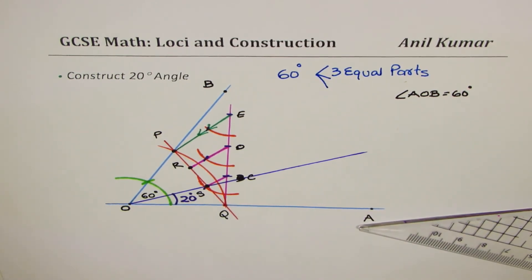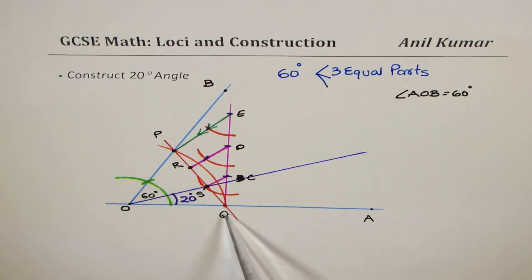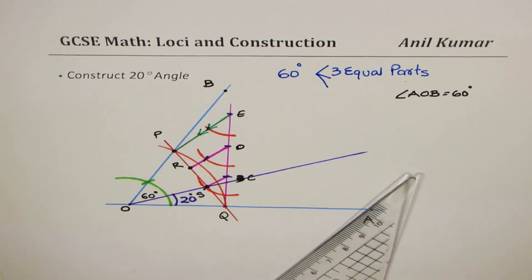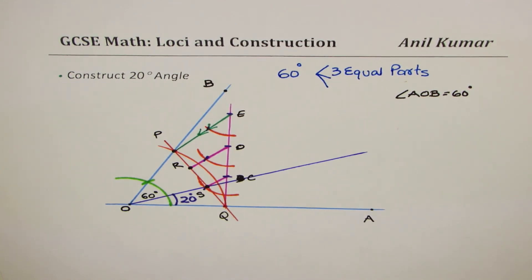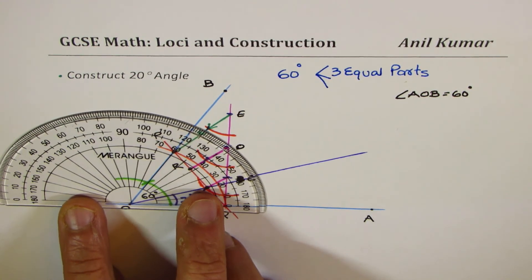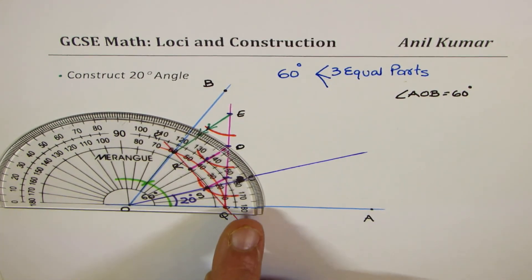So that is how you can accurately construct an angle of 20 degrees. What we did was first construct a 60 degrees angle, then join the two arc points P and Q, and divide segment PQ into three equal parts. Joining all the division lines through O gives 20, 40, and 60 degrees angles. You can place a protractor on this to check the result.